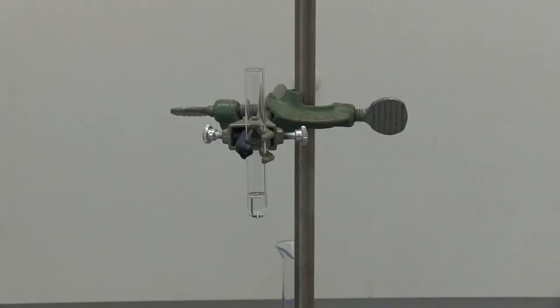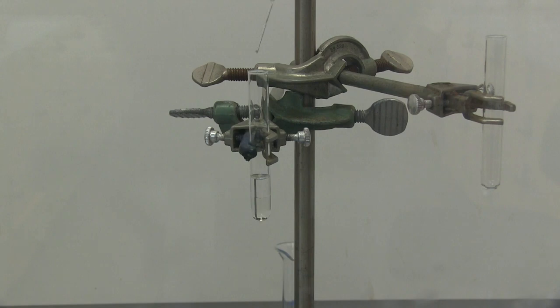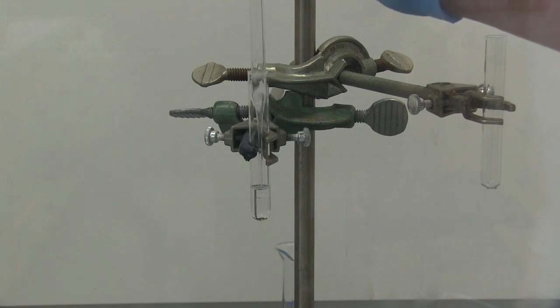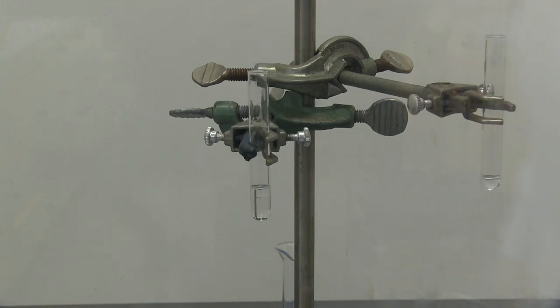Now I have 0.3 milliliters of 3 molar sodium hydroxide. We're going to add that in to neutralize our distillate. I'm going to use this glass pipette to mix up the two layers. Now that our layers have separated, we're going to take off the top layer and transfer it to a new test tube.